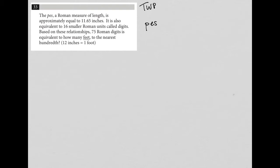PES, or however you pronounce it, it doesn't really matter, is equal to 11.65 inches. Next sentence, it says it is also equivalent to 16 smaller Roman units called digits. So that means this is also equal to this, 16 digits,